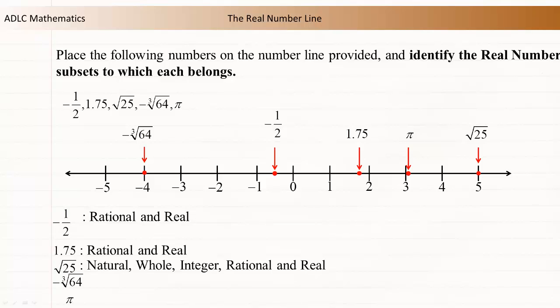The square root of 25 is equal to 5. The number 5 is a natural number, a whole number, an integer, a rational number, and a real number.